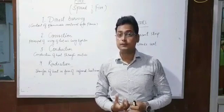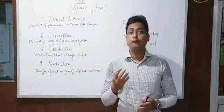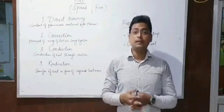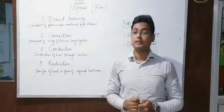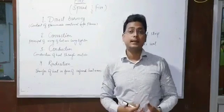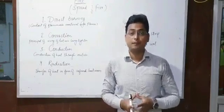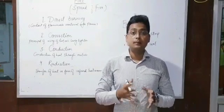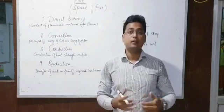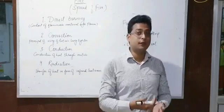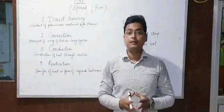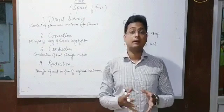Fire is a form of energy. There are four methods through which heat can travel from one place to another. The first of those methods is direct burning. Direct burning is when any flammable material comes into contact with flames — it also starts burning. The fire ignites the flammable material and it starts burning. This happens at workplaces and in our homes.